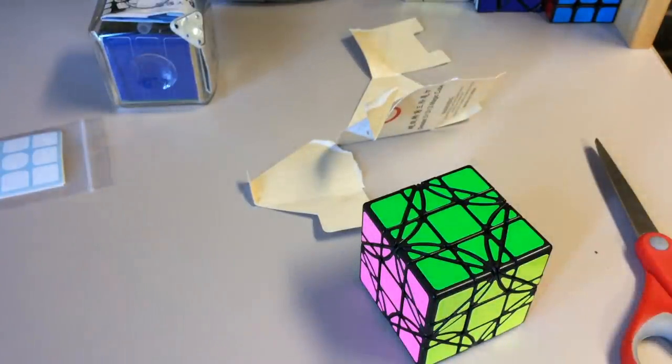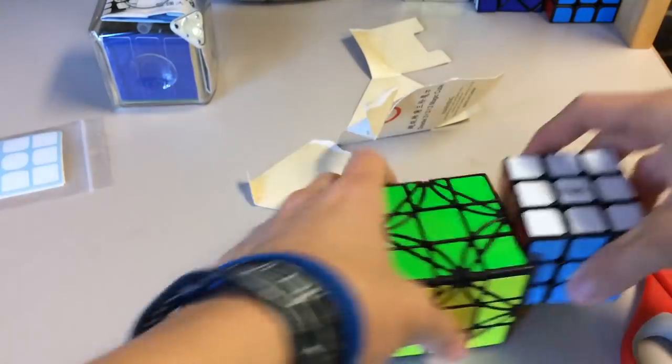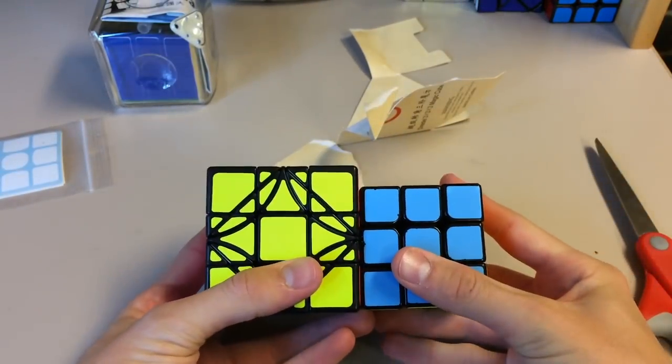Let me compare it to a 57mm cube. Here's my Aolong V1. So it's pretty big.